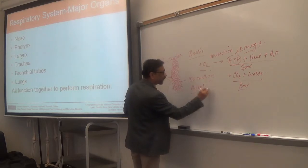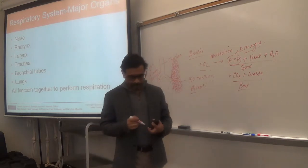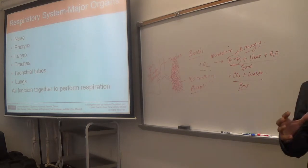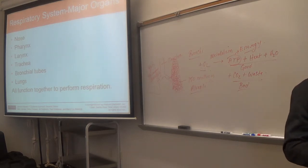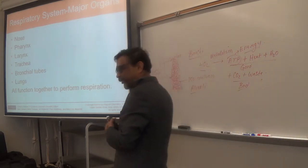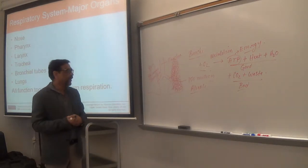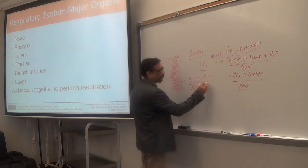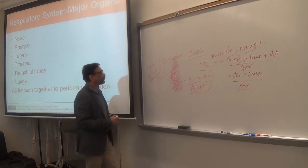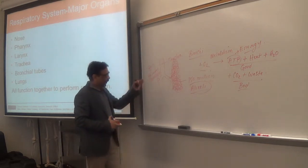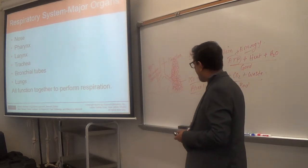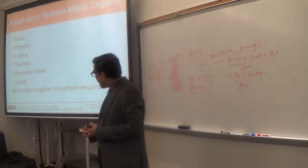Together, two lungs have about 300 million alveoli — you can imagine how small those balls are. Alveoli is plural; alveolus is singular. That is the structure of the respiratory system, or the parts of the respiratory system.